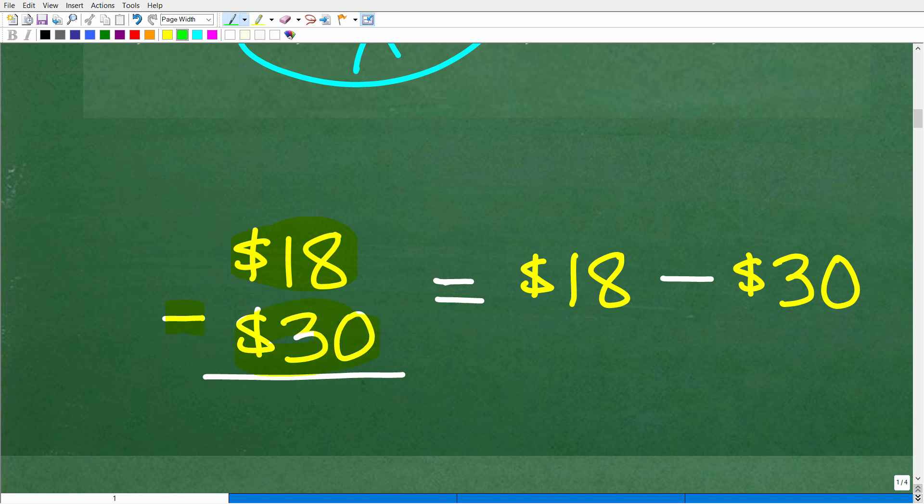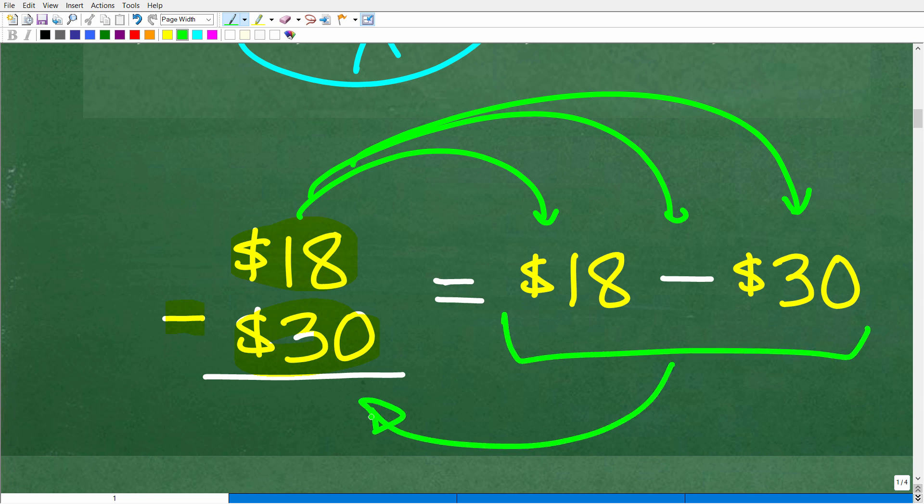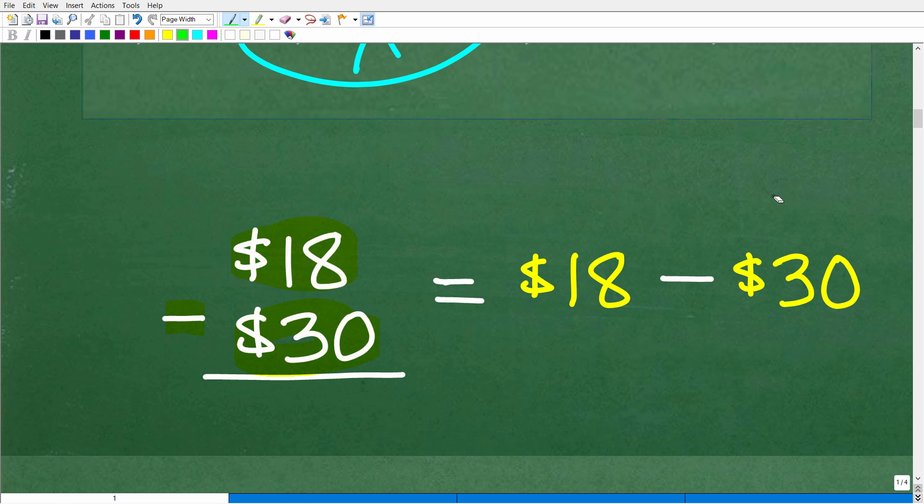But if this was our problem, we have $18 minus $30, the correct way we can write this or another way we can write this is $18 minus $30. So this problem right here, this is equivalent to this. But actually, the problem itself, these parentheses, really mean something very important. And everybody who reads any sort of financial statements needs to understand this. So before I get to those parentheses, though, let's just go ahead and finish out this problem here.